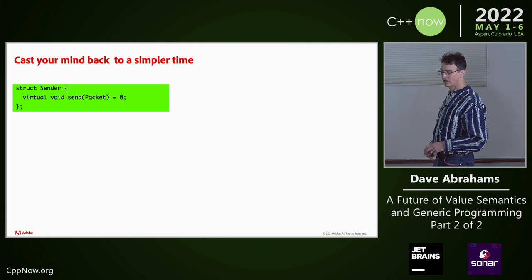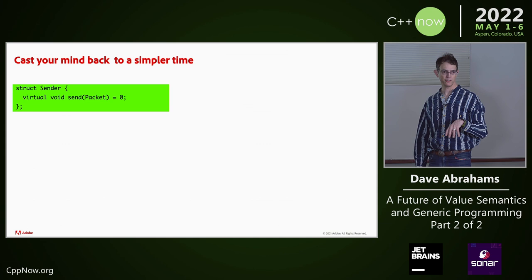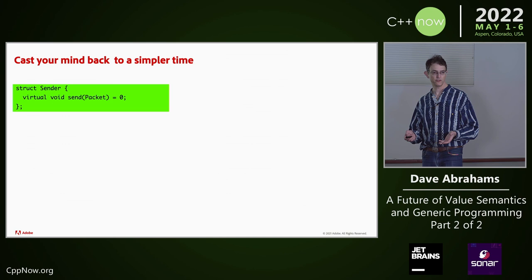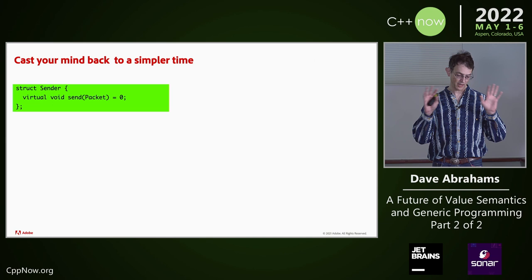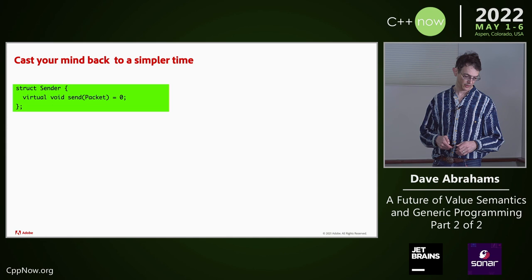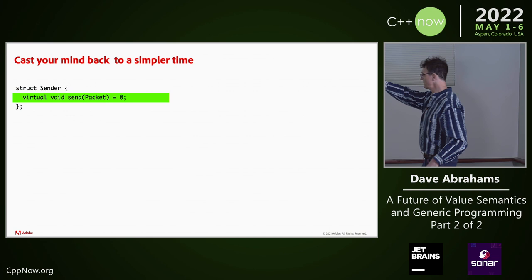I'm going to ask you to cast your mind back. I know you're all template jocks really good at pouring through those layers of error messages. But just think back — if you're a young person, think to a different language like maybe when you programmed in Java. A time before SFINAE, subsumption, ADL, two-phase name lookup, instantiation backtraces, and especially before template metaprogramming. When you would describe the requirements of your interfaces using normal-looking function signatures. That's an interface — pretty normal.